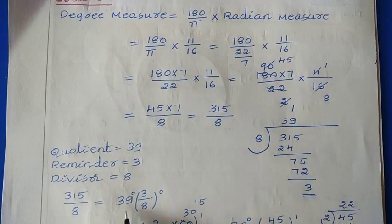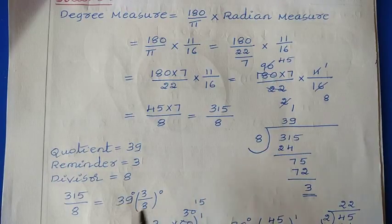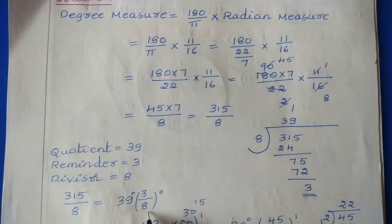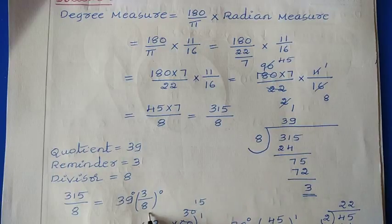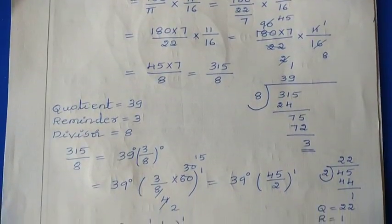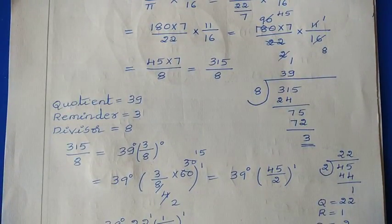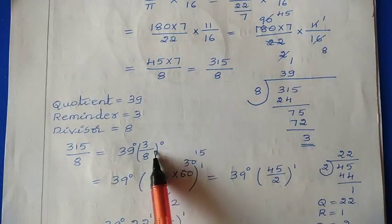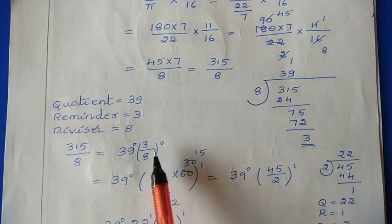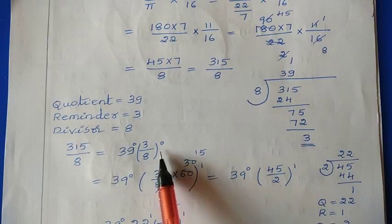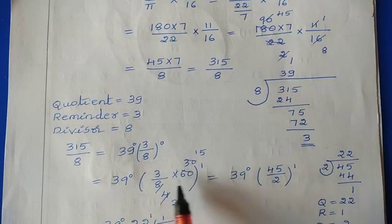Write the quotient as 39 degrees — now we have one complete degree with no fraction. Next, take remainder divided by divisor: 3/8 degree. But this cannot be taken as a whole degree since it is in fraction form. Now you need to convert this fractional degree into minutes. We know that 1 degree = 60 minutes, so multiply 60 to 3/8.